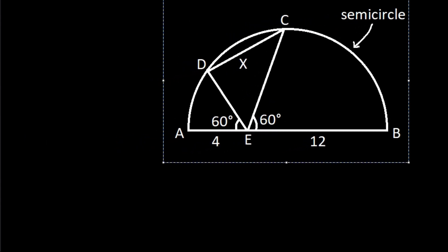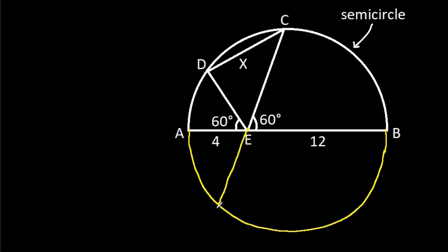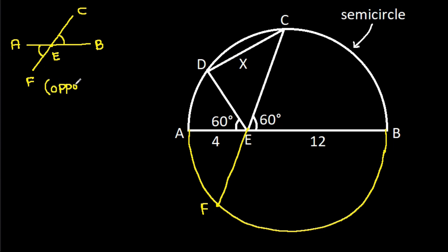If we complete this circle and extend CE, suppose this point is F, then AB and CF are intersecting at E. So these two angles will be opposite angles — that means they will be equal. So this angle will also be 60 degrees.